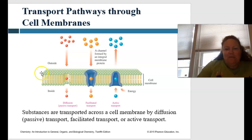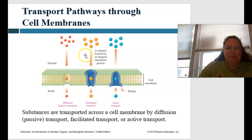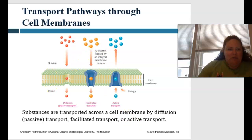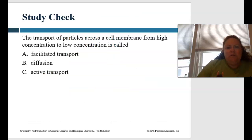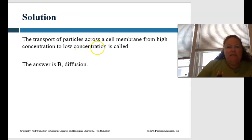Again, the phospholipid bilayer has two layers of phospholipids, and if you look closely, a phospholipid has two tails — that's where your trigger word comes in. Substances are transported across the cell membrane by diffusion — either passive, facilitated, or active. For a final study check: the transport of particles across the cell membrane from high concentration to low concentration is called what? When it's going from high to low, that's just the natural direction, so that would be diffusion.